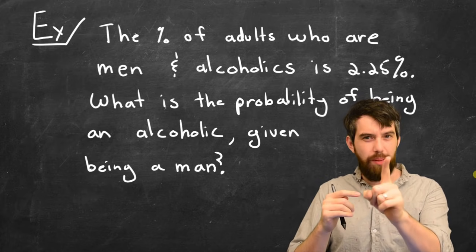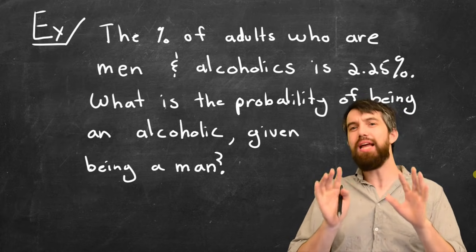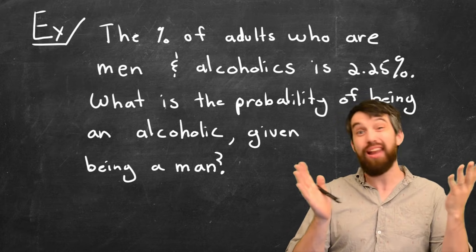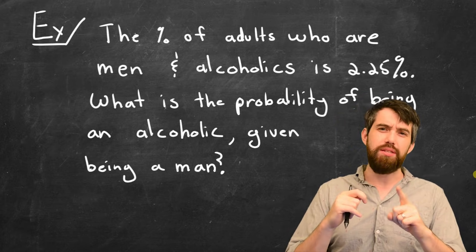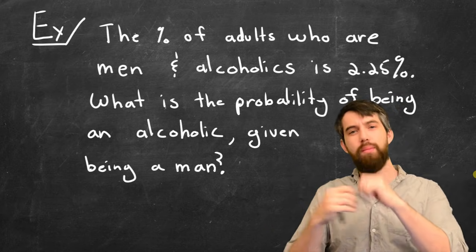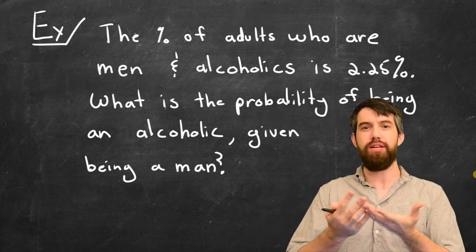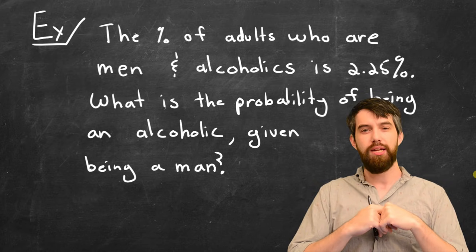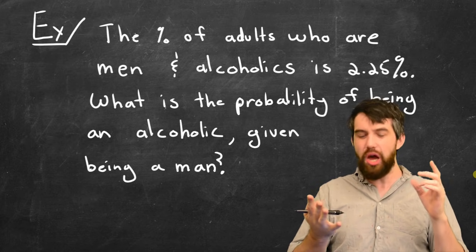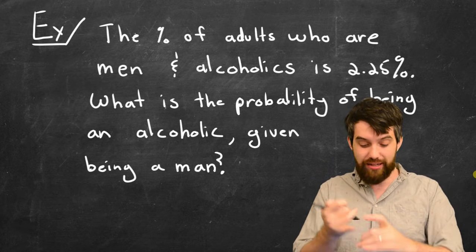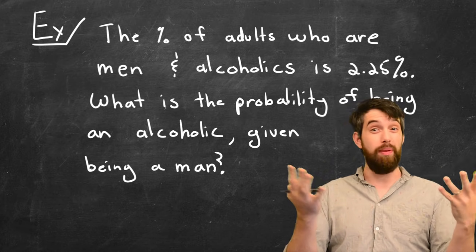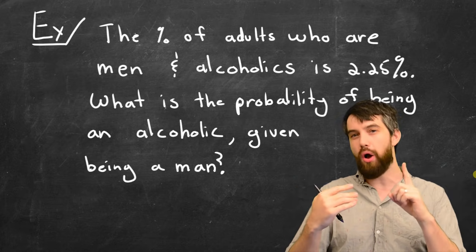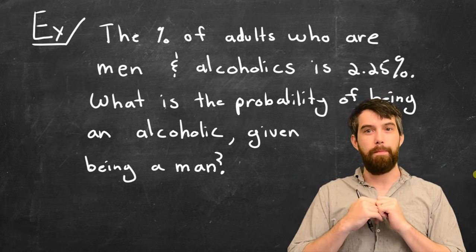In this example, I've given you an intersection. The percent of adults who are both male and alcoholic is 2.25%. The question is: what is the probability that you're an alcoholic if you know that you're a male? If you know that your patient is a male, what is the probability that they're an alcoholic? We're going to use conditional probability to figure this out, because we know the probability of being an alcoholic and a male — that's 2.25% — and we know the probability of being male, approximated at 50%.